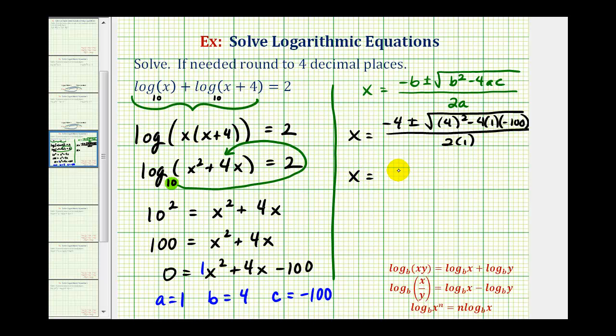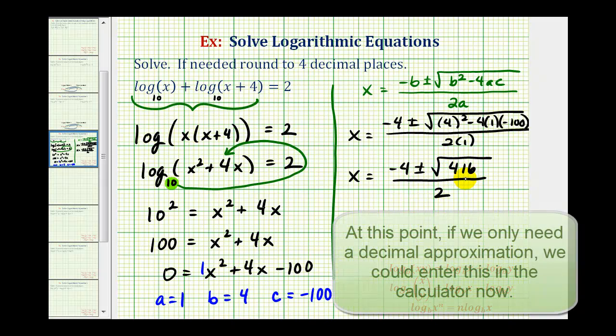We'll have x equals negative four, plus or minus, this is going to be 16 plus 400, so it's the square root of 416, divided by two. Let's continue simplifying this on the next slide.